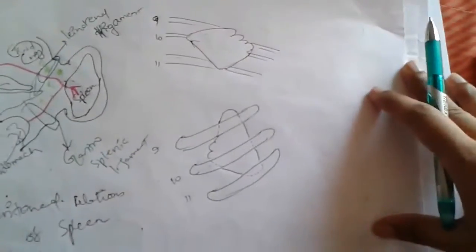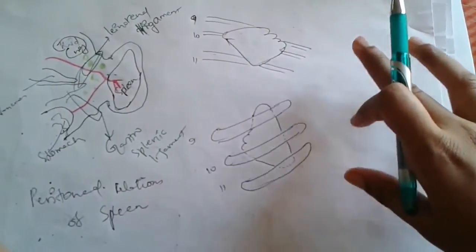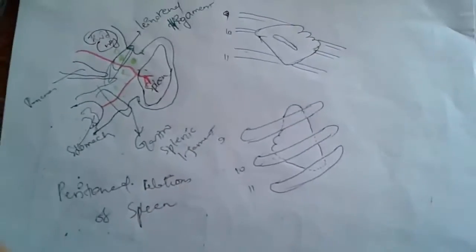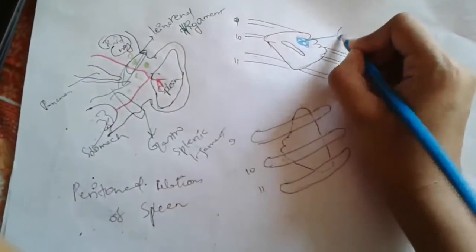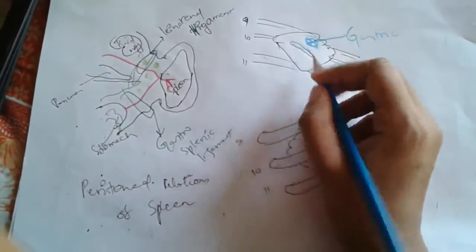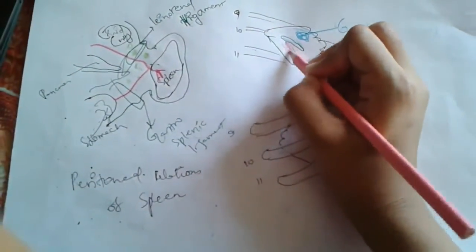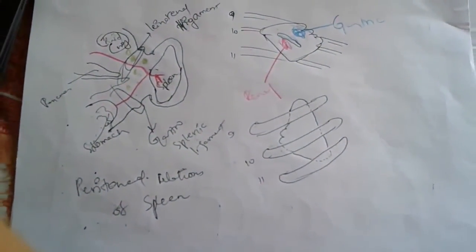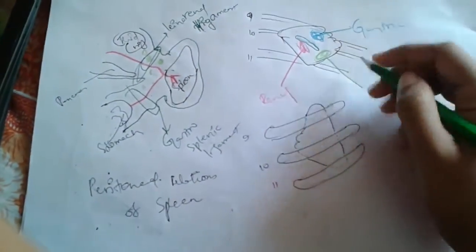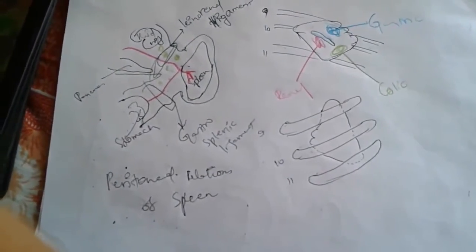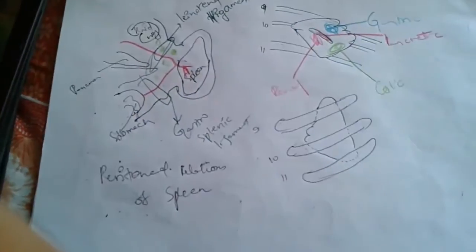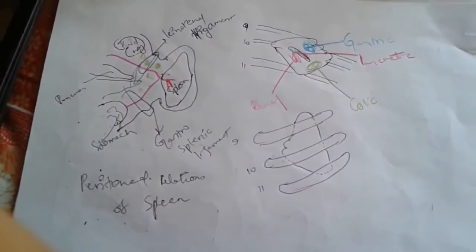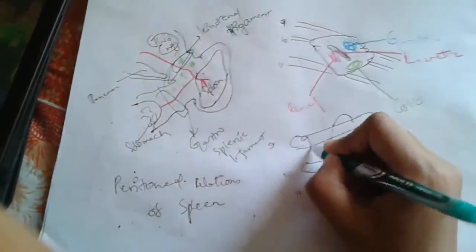For the visceral relations, on the visceral surface above there is the gastric impression between the superior border and the hilum or intermediate border. The renal impression is between the intermediate border and the inferior border. To the lateral side there is a colic impression for the left colic flexure, and the hilum of the spleen shows the pancreatic impression. The diaphragmatic surface is related to the 9th, 10th, and 11th ribs.